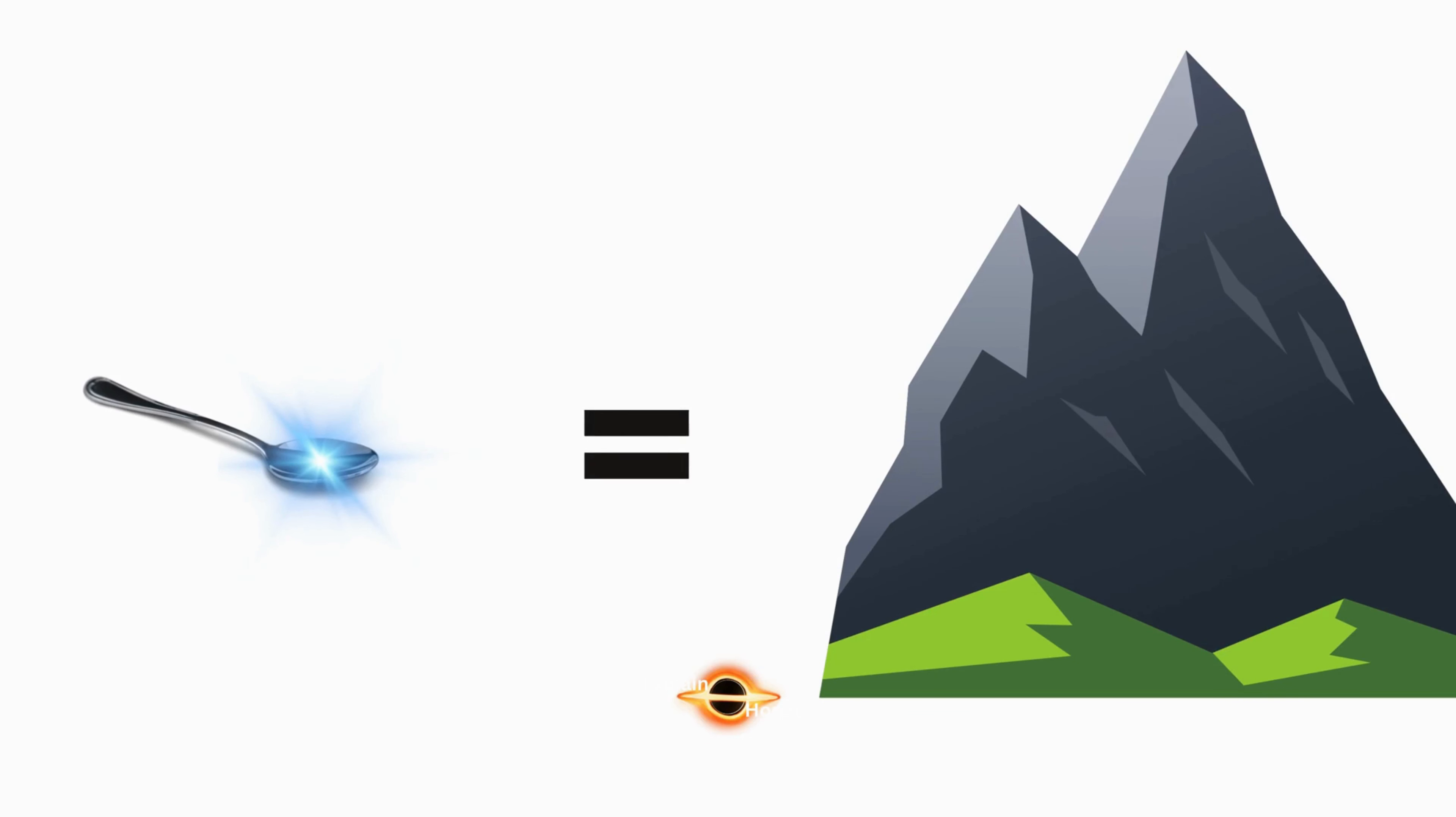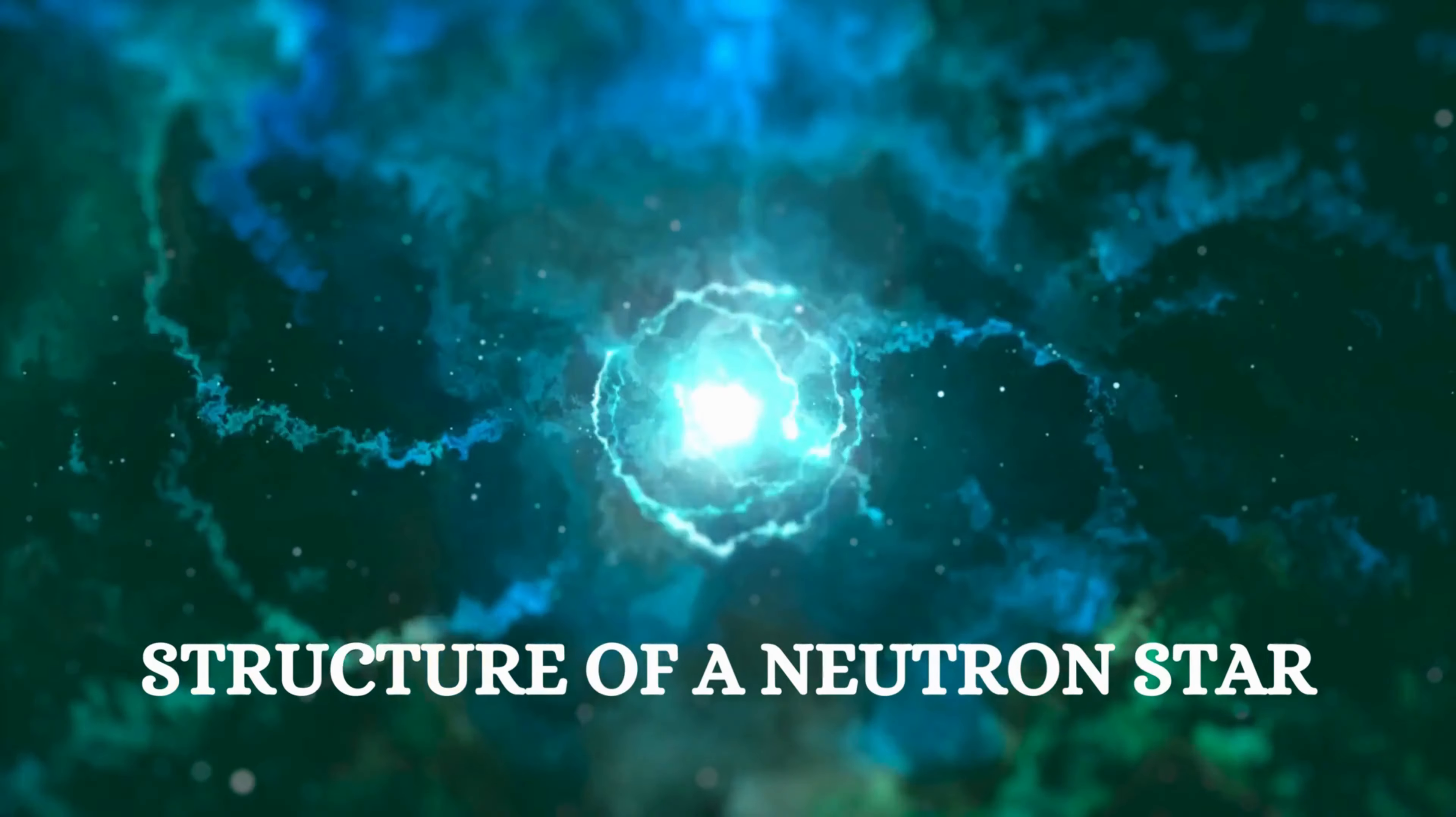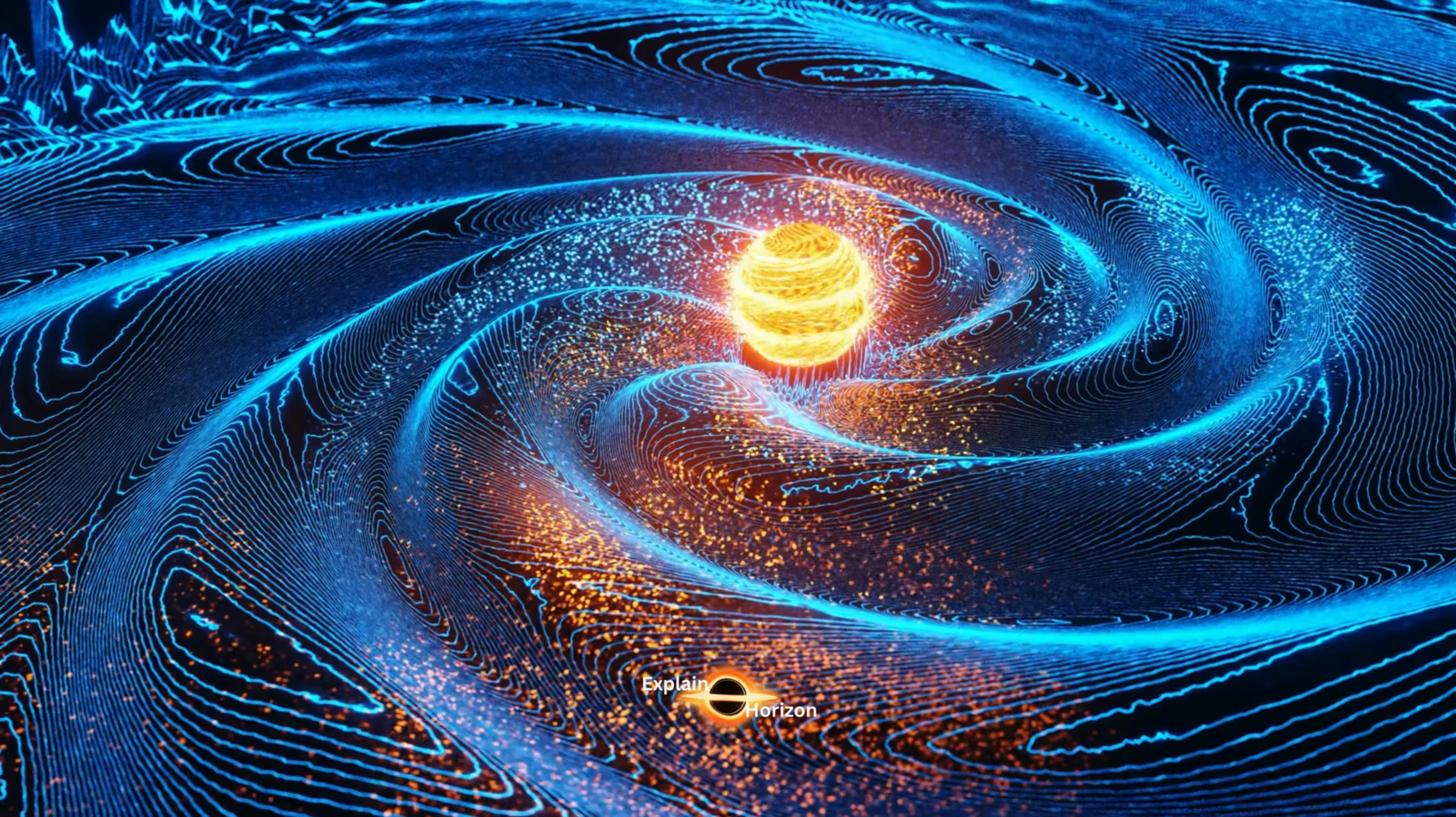Neutron stars are so dense that a teaspoon of their material would weigh as much as a mountain on Earth. Structure of a neutron star. Neutron stars have a diameter of about 20 kilometers and a mass that is 1.4 times that of our Sun.